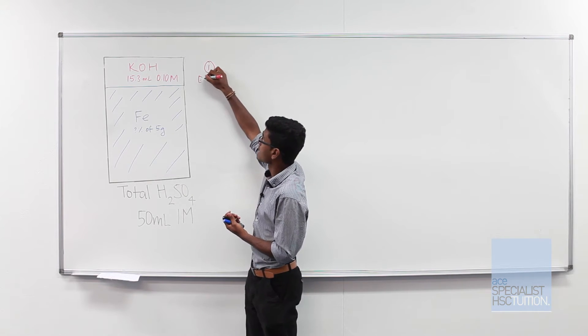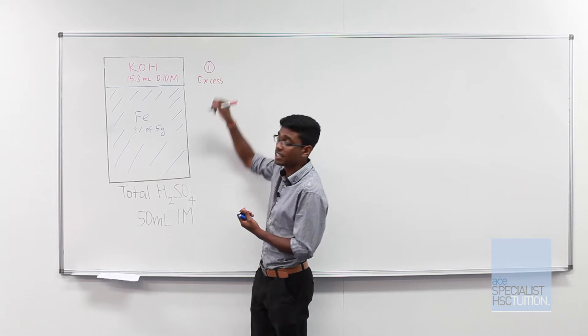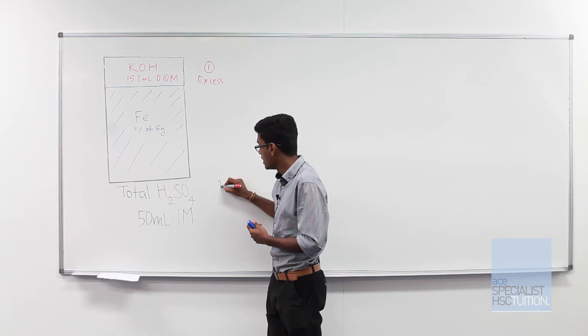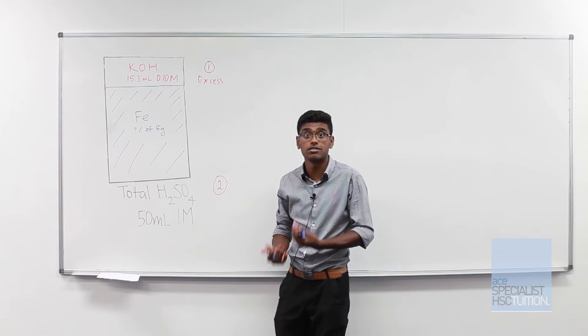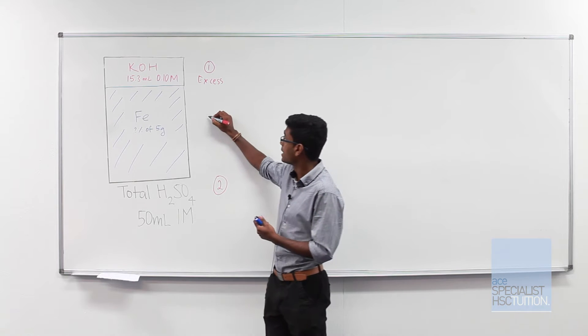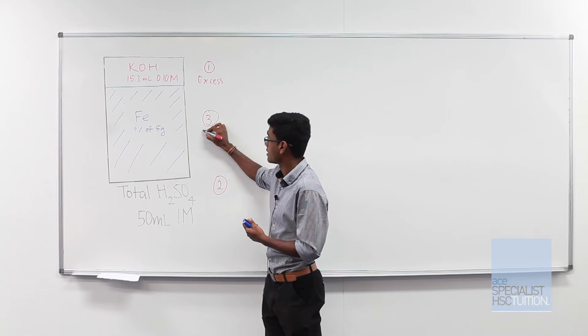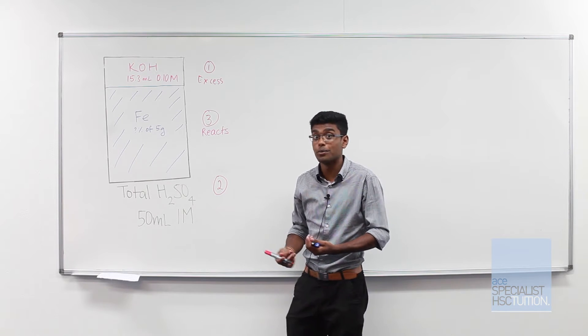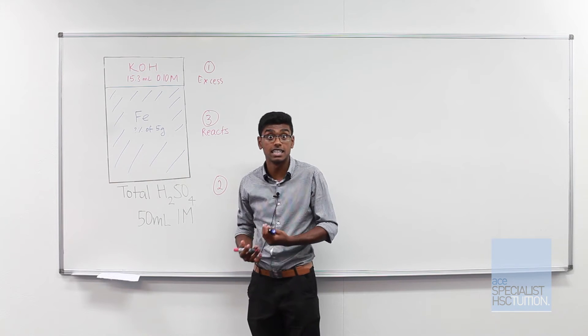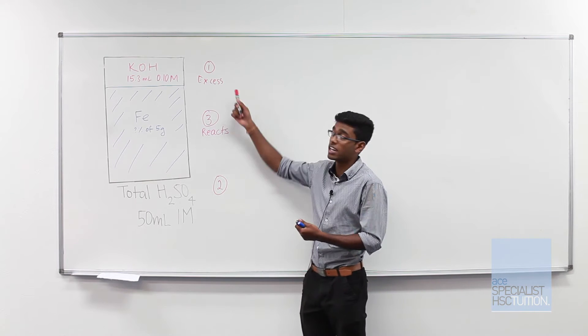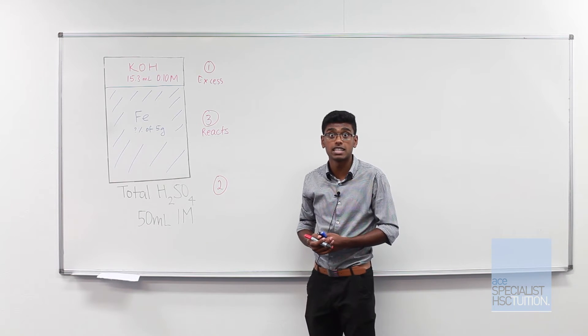So the way we're going to go about answering this question is first working out how much sulfuric acid was in excess. If we can work that out, we can then also work out the total amount of sulfuric acid. And by subtracting the two from each other, we can work out the amount of sulfuric acid that actually reacts. And once we've worked that out, we can work out how much iron is in our carbon steel compound. So let's start off with our first step, working out how much sulfuric acid was there in excess.